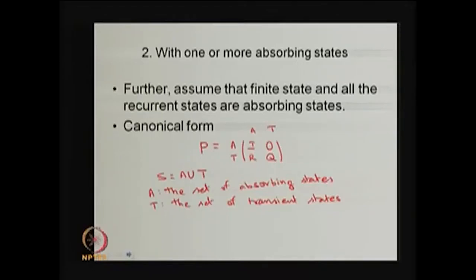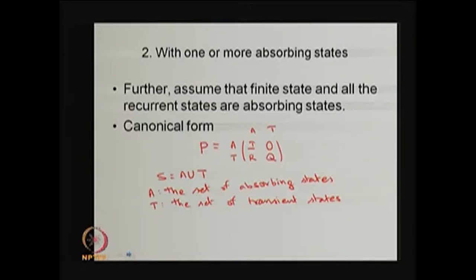We are moving into the second type. In the second type, this is a reducible Markov chain, but here each closed communicating class consists of only one element — that is nothing but the absorbing states — but more than one closed communicating class are possible. Therefore, this type is called one with one or more absorbing states. Here also my interest is to find out the stationary distribution, specifically the probability of absorption and the mean time before absorption.